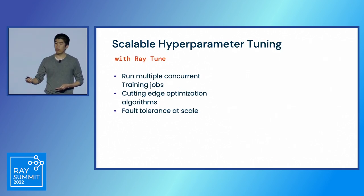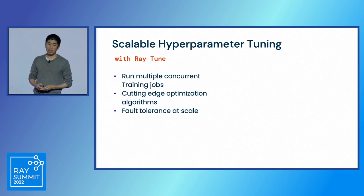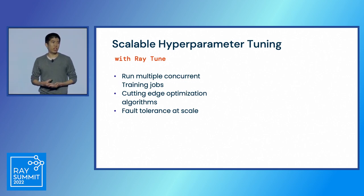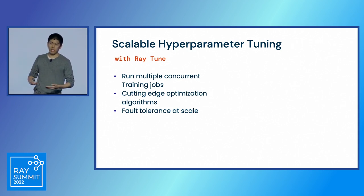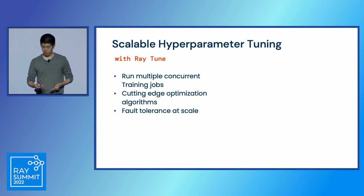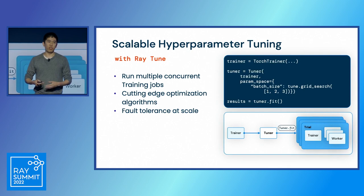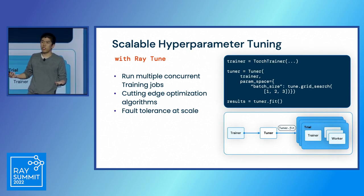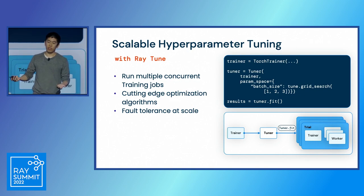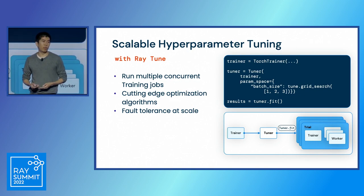The Tune library provides scalable hyperparameter tuning. You can use it to run a hyperparameter sweep across multiple concurrent training jobs. It integrates with cutting-edge optimization algorithms from the open source ecosystem and provides fault tolerance for your experiments at scale. Given an existing trainer such as a Torch Trainer — or it could be any function — you can create a tuner, give it a parameter space, and then run that experiment with tuner.fit.